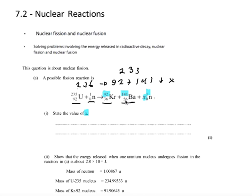So we have 236 on one side, 233 plus an unknown number on the other side, X must be 3.